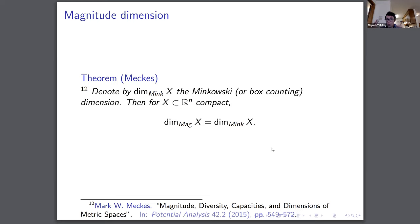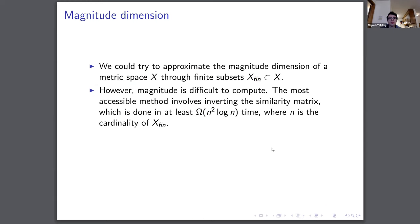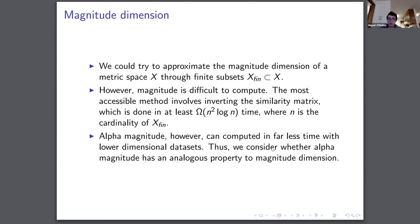One thing you might want to do is use this to approximate dimensions of spaces instead of doing what's needed to approximate the Minkowski dimension directly. But magnitude is really difficult to compute — we need to invert the similarity matrix, which takes at least omega(n^2 log n) time. So as spaces get quite large, magnitude becomes very expensive. What we think provides a solution is that with alpha magnitude, for lower-dimensional data sets, we can perform computations much faster, and if we have an analogous magnitude dimension definition, we can obtain dimensional estimates in far shorter computational time.